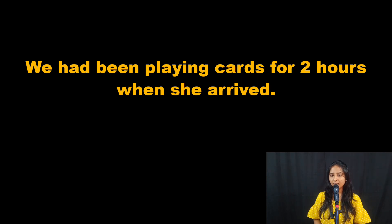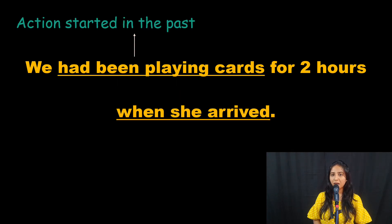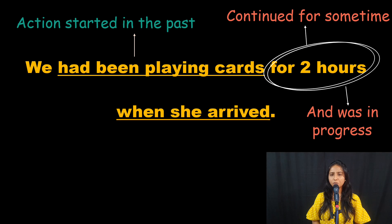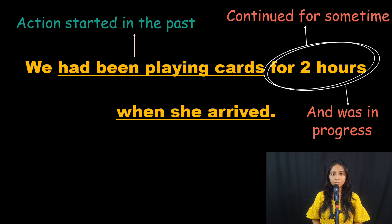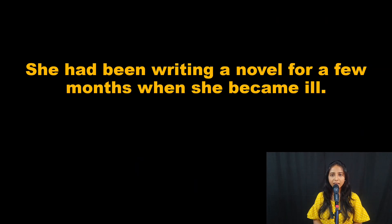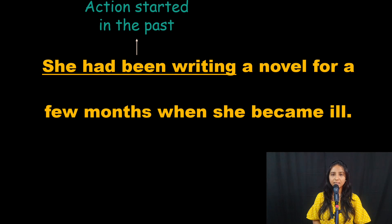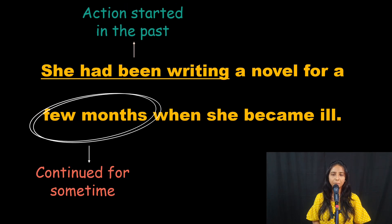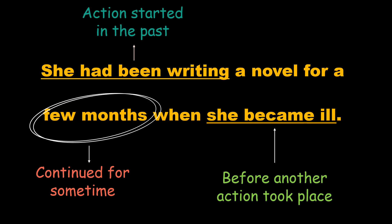We had been playing cards for two hours when she arrived. So the action started in the past — we had been playing cards — and it continued for some time, that is two hours, and it was in progress before another action happened, which is 'when she arrived'. She had been writing a novel for a few months when she became ill. The action of writing started, continued for a few months, and was in progress before another action took place — she became ill.